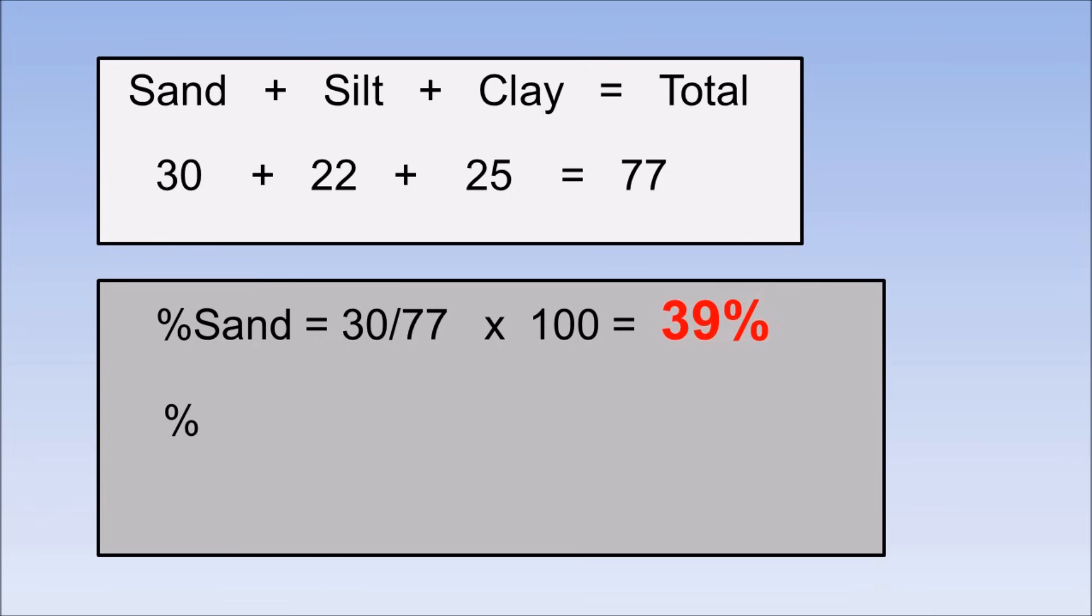Percent silt is equal to 22 divided by 77 times 100, which is 29%. I'm rounding to whole numbers, which is accurate enough for gardening.